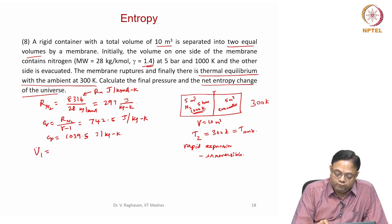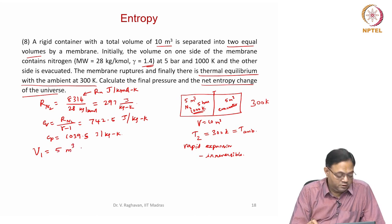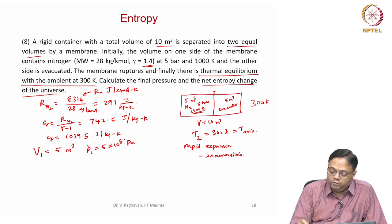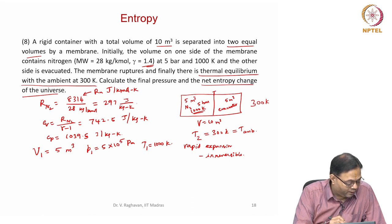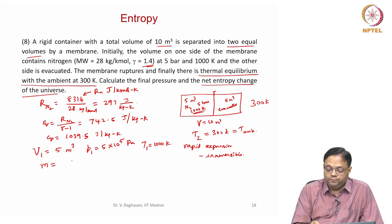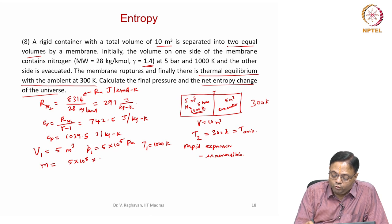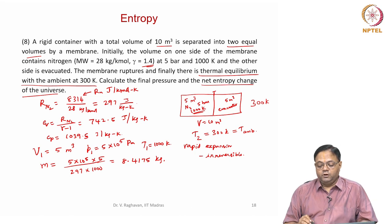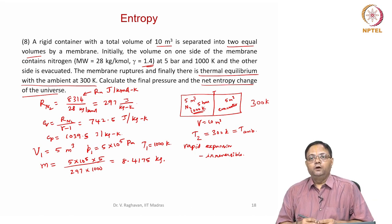V1 for the nitrogen is 5 cubic meters, P1 equals 5 bar or 5×10⁵ Pascals, and T1 equals 1000 Kelvin. The mass of nitrogen is found from m = PV/RT: 5×10⁵ × 5 divided by 297 × 1000, which equals 8.4175 kg. That is the mass contained on the left side of the chamber initially.